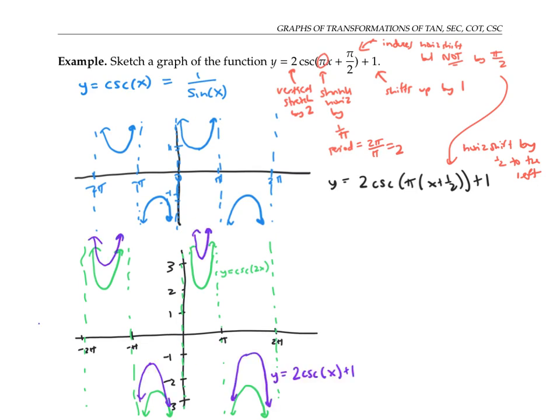Next, I'll worry about the horizontal motion. Instead of a period of two pi, I'm going to have a period of two. But in addition, everything is going to be shifted left by one half. So instead of having my vertical asymptotes at zero, pi, two pi, and so on...